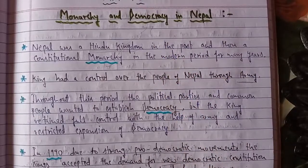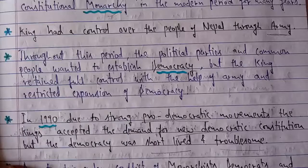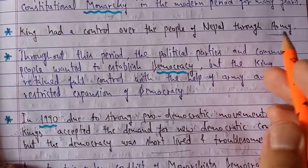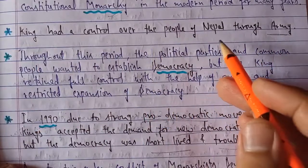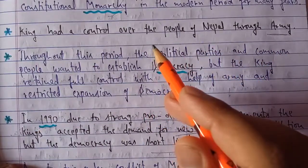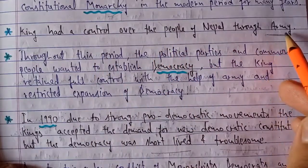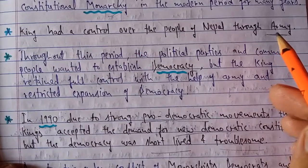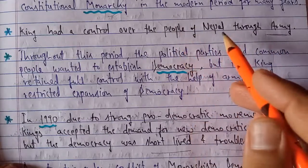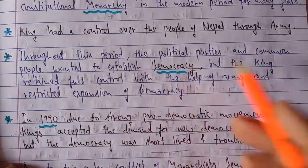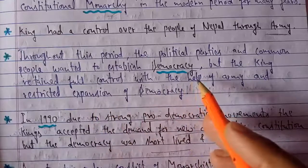The first point is the king had full control over the people of Nepal through the army. The people of the army were totally controlled by the king, and the king's power came from his troops. Through his troops he used to exercise and control power, showing his dominance over the people of Nepal with the help of the army.